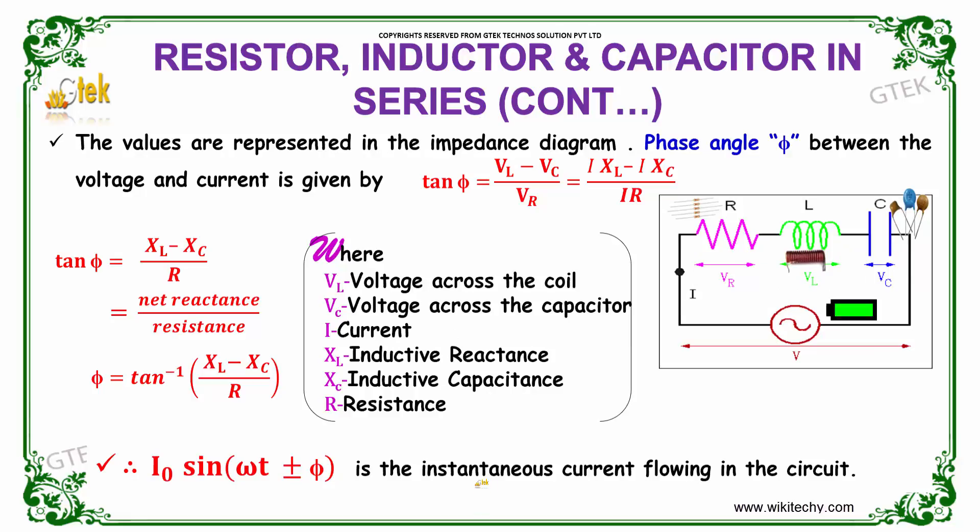These values are represented in the impedance diagram. The phase angle phi between the voltage and the current is given by tan phi equals VL minus VC divided by VR.